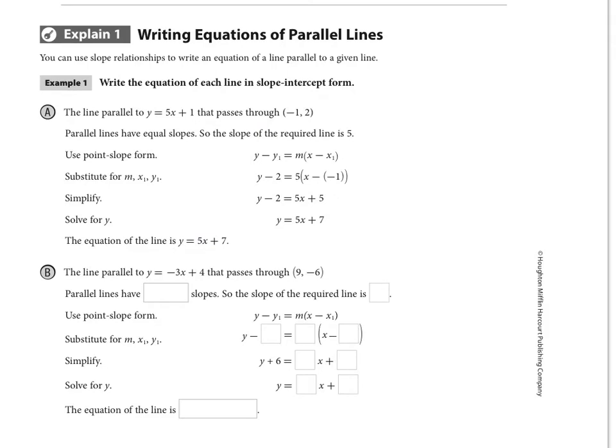So on the next page here we're writing equations of parallel lines and we're going to be given an equation of a line and then a point and we're going to use the slope relationships to use point slope form. Notice point slope form right here remember is y minus y1 equals m times x minus x1 where a reminder that x1 comma y1 is whatever point is given to you.